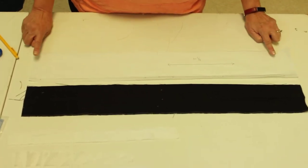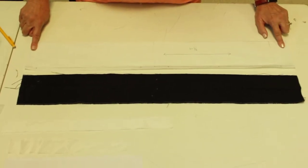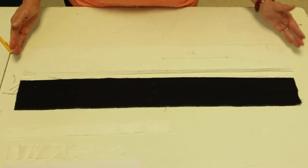Okay, so again, that's waist plus ease, your underlap inch and a half, and two seam allowances. That's your length.